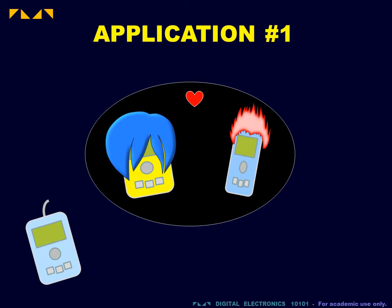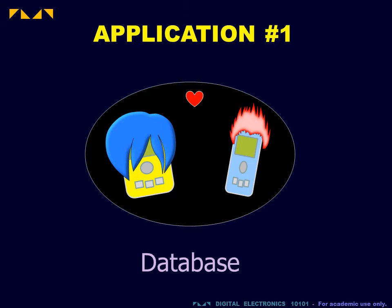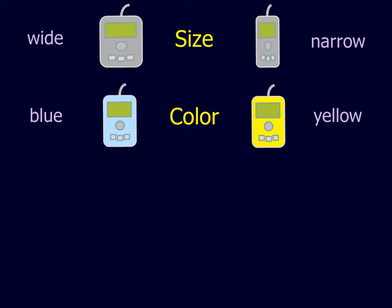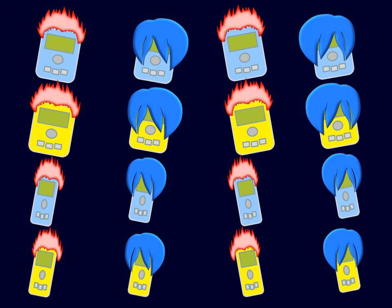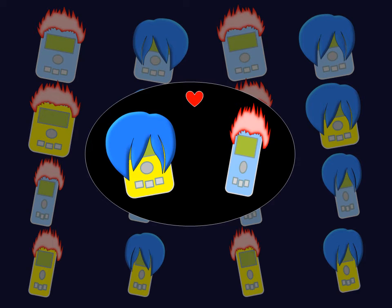In the first application, we discover that a character wants to start a computer dating service for computers. His service consists of a database of clients categorized according to four attributes: size, color, hair, and leaning. Combinations of these attributes result in 16 possible client profiles. The logic operators will here be used to perform client searches based on profile criteria.